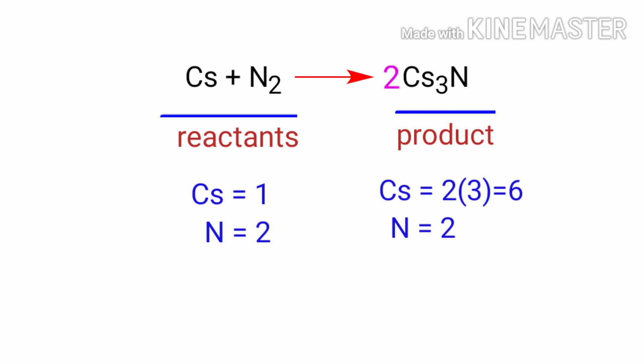Now we need to balance the caesium atoms. To do this, we need to put a coefficient of 6 in front of caesium. The equation is now balanced. There are 6 caesium atoms and 2 nitrogen atoms on both sides.